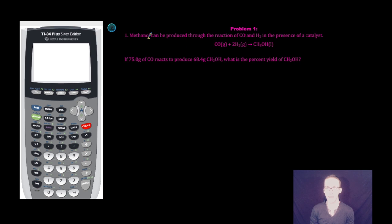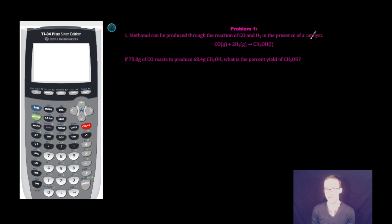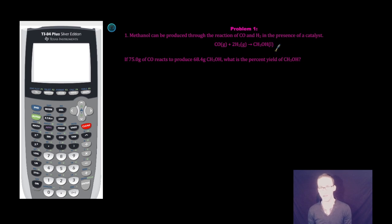If you take a quick look at problem one, it says methanol can be produced through the reaction of CO — carbon monoxide — and hydrogen in the presence of a catalyst. There's a reaction, and it's already balanced.